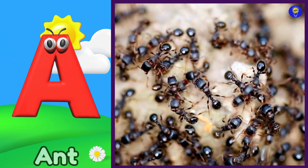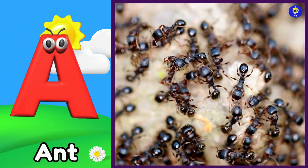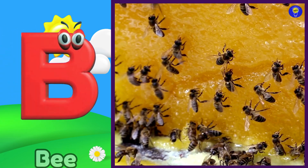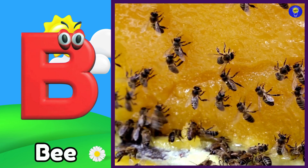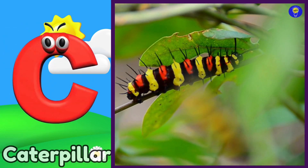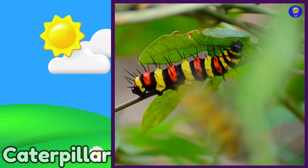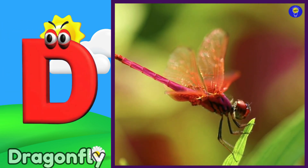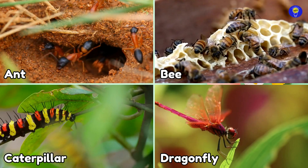A is for ant. A, a, ant. B is for bee. B, b, bee. C is for caterpillar. C, c, caterpillar. D is for dragonfly. D, d, dragonfly.